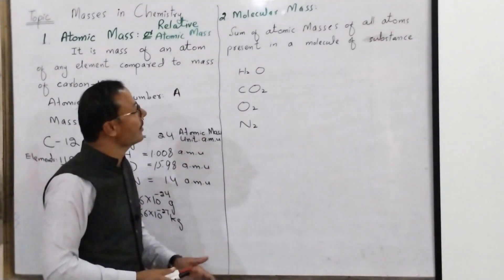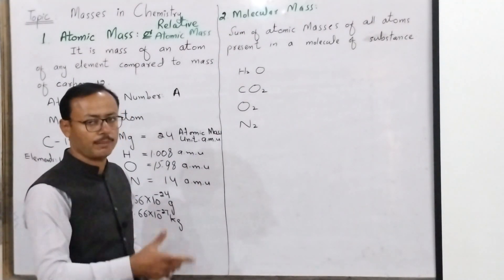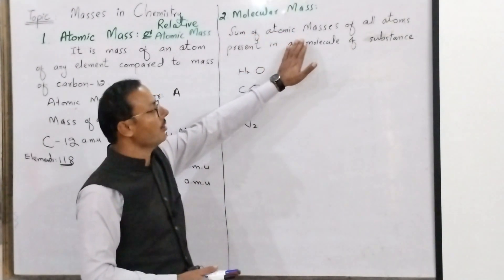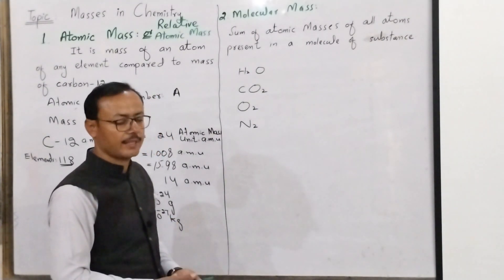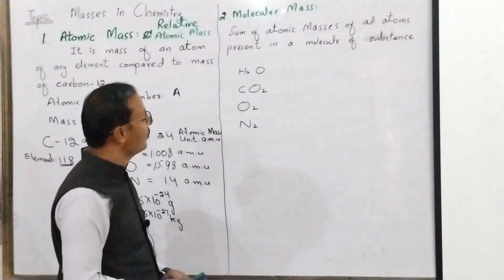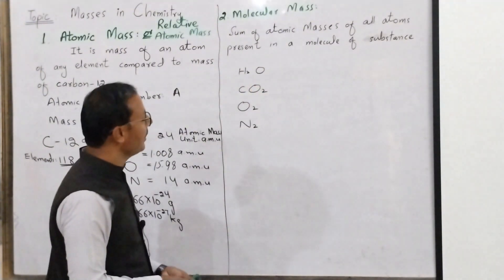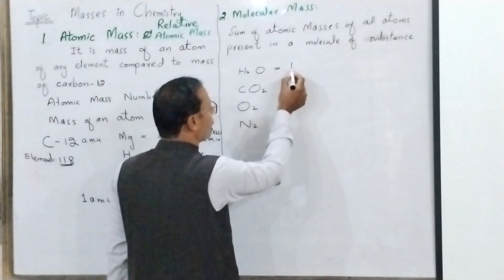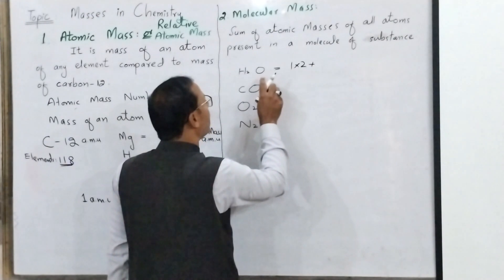Next we have molecular mass. After atomic mass, molecular mass is the second mass in chemistry that is used more. Molecular mass is the sum of atomic masses of all atoms present in a molecule of a substance. For example, H₂O — water. In the water molecule, there are two hydrogen atoms and one oxygen atom. So when we discuss its mass, we write: hydrogen's atomic mass is 1, multiply by 2 because there are two atoms, plus oxygen.